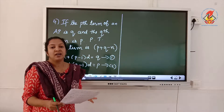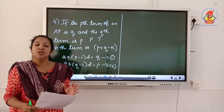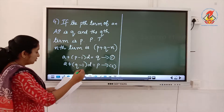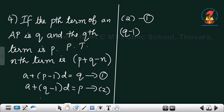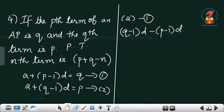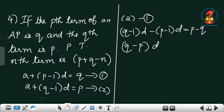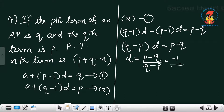To find a and d — the first term and the common difference — subtract equation 1 from equation 2. This gives (q minus 1)d minus (p minus 1)d equals p minus q, so (q minus p) into d equals p minus q. Therefore d equals (p minus q) divided by (q minus p), which equals minus 1.